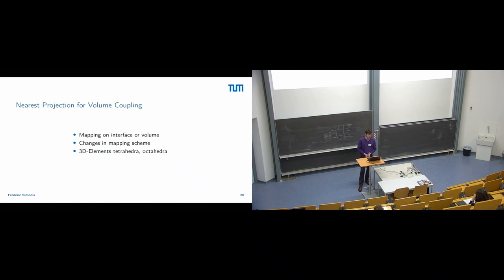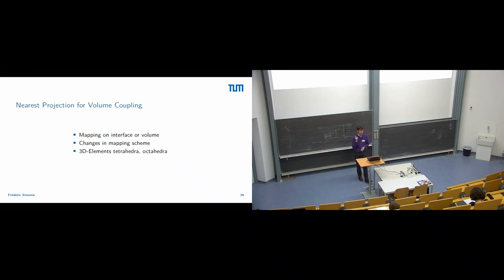For minor anticipated features: the first is nearest projection for volume coupling. You can do volume coupling at the moment with preCICE. With two-level initialization this became computationally bearable, and now we need to adjust the nearest projection mapping so you can project to two- and three-dimensional elements — telling it to project on a volume rather than an interface. This needs internal changes and we will also need to add 3D elements, otherwise it makes no sense.